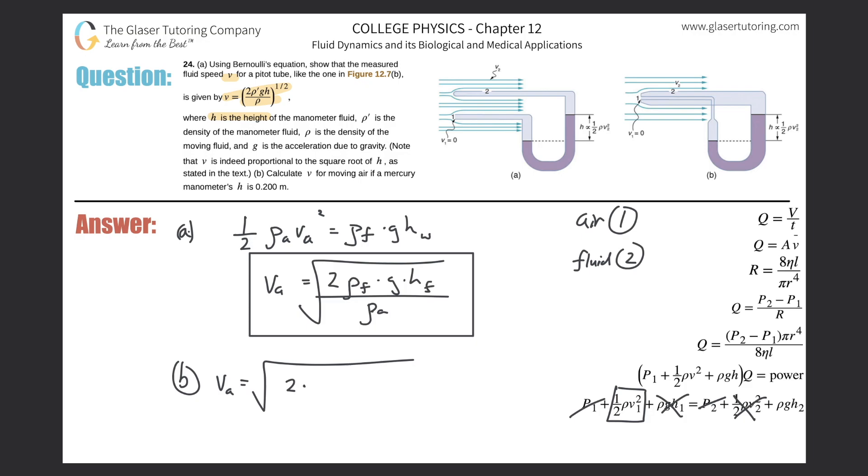The density of mercury, this is about, I think it's about 13,600 kilogram per cubic meter. Multiplied by gravity. Then multiplied by the height of that mercury. So they told us it's 0.2. Then all divided by the density of the air. Density of the air is about 1.29.